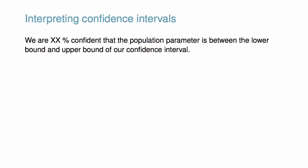A careful eye might have observed the somewhat awkward language used to describe confidence intervals. The correct interpretation is that we are some percent confident that the population parameter is between the lower bound and upper bound of our confidence interval.